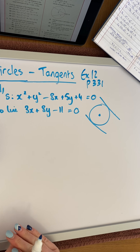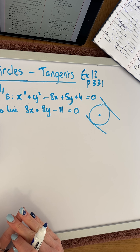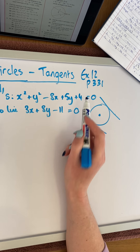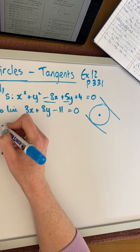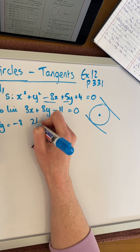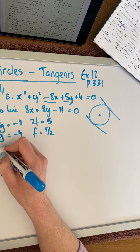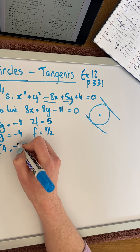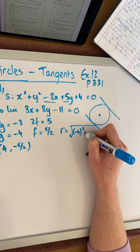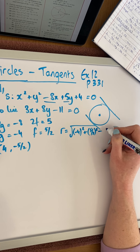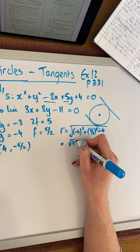We need two pieces of information to find the equation of a line: a point of contact and the slope. First, we get the center and radius of the circle. Looking at the coefficients: 2g = −8, so g = −4; 2f = 5, so f = 5/2. The center is (4, −5/2). The radius is √(g² + f² − c) = √((−4)² + (5/2)² − 4), giving a radius of √(73/2).